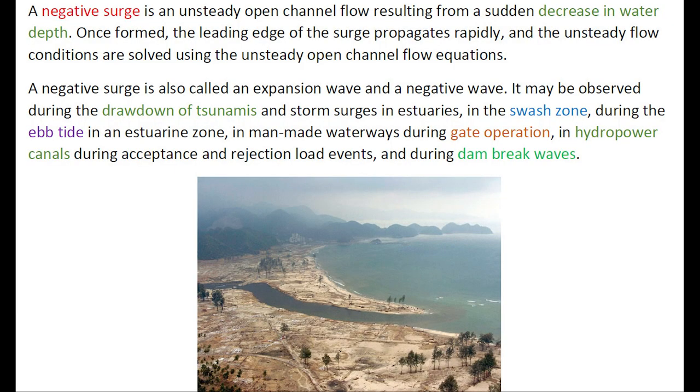A negative surge is an unsteady open channel flow resulting from a sudden decrease in water depth. Once formed, the leading edge of the surge propagates rapidly and the unsteady flow properties are solved using the unsteady open channel flow equations.